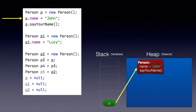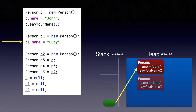Moving on to the next instruction — when these two lines are executed, which is person p1 equals new person and p1.name equals Lucy, we are creating a new object and assigning it to a new variable called p1. Once these two statements are executed, this is how the diagram in the heap and stack looks.